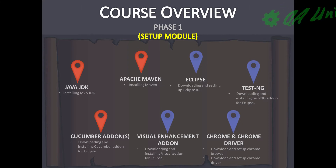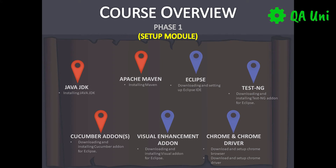This course is split up into three phases. The first phase is actually setting up our environment. We'll be installing the Java JDK and Apache Maven, and we'll be setting up the system variables for both. We'll be downloading and setting up Eclipse the correct way, because the actual task can be quite tricky, so I'm going to show you the correct way to set up Eclipse.